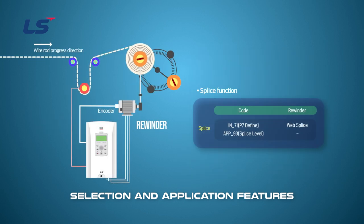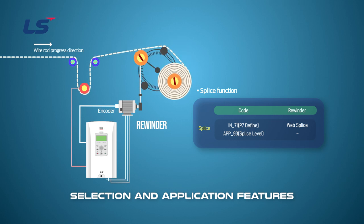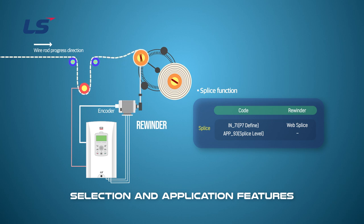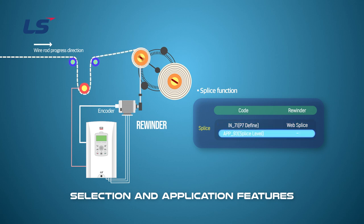The splice function will replace the bobbin with a new one when the rewinder's winding is completed, and will be used to automatically replace it to improve work efficiency. As the diameter increases, the motor speed gradually decreases due to the diameter operation, and if the bobbin is automatically replaced in this state, the empty roll sags. To avoid this, speed is increased by the splice level to prevent sagging. When the multi-function input terminal set to splice is turned on, the output of the web PID controller is blocked, and the final speed command is determined by an equation combining the frequency command and APP number 93 splice level.